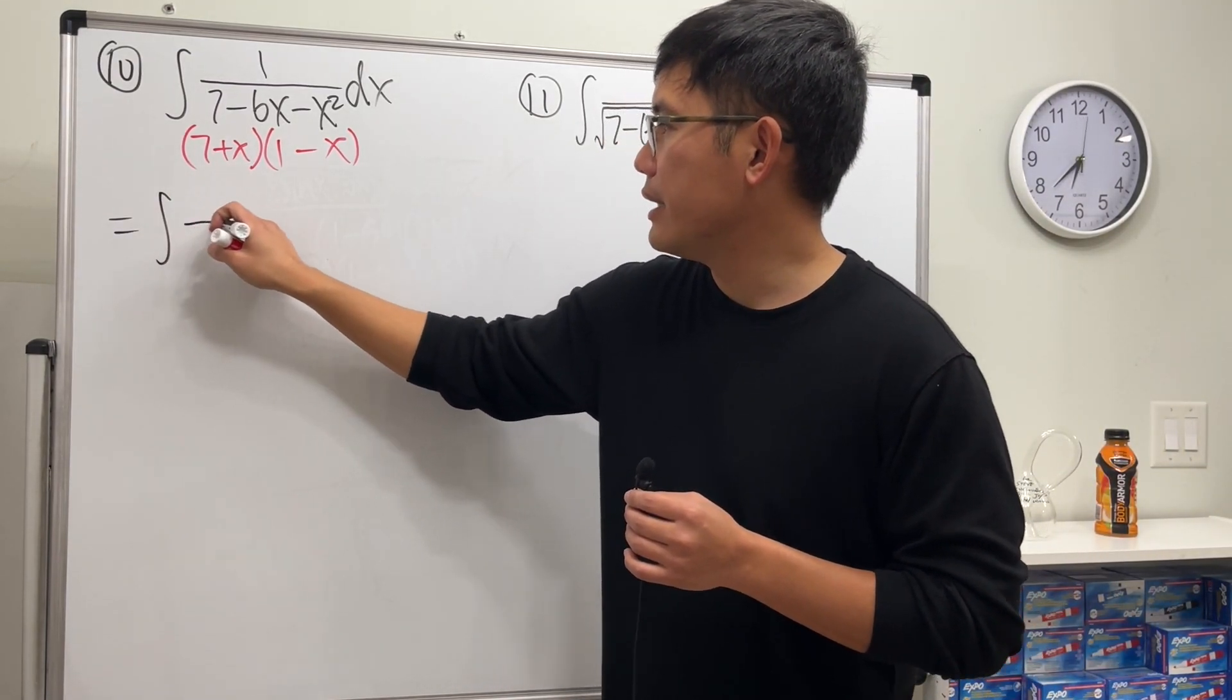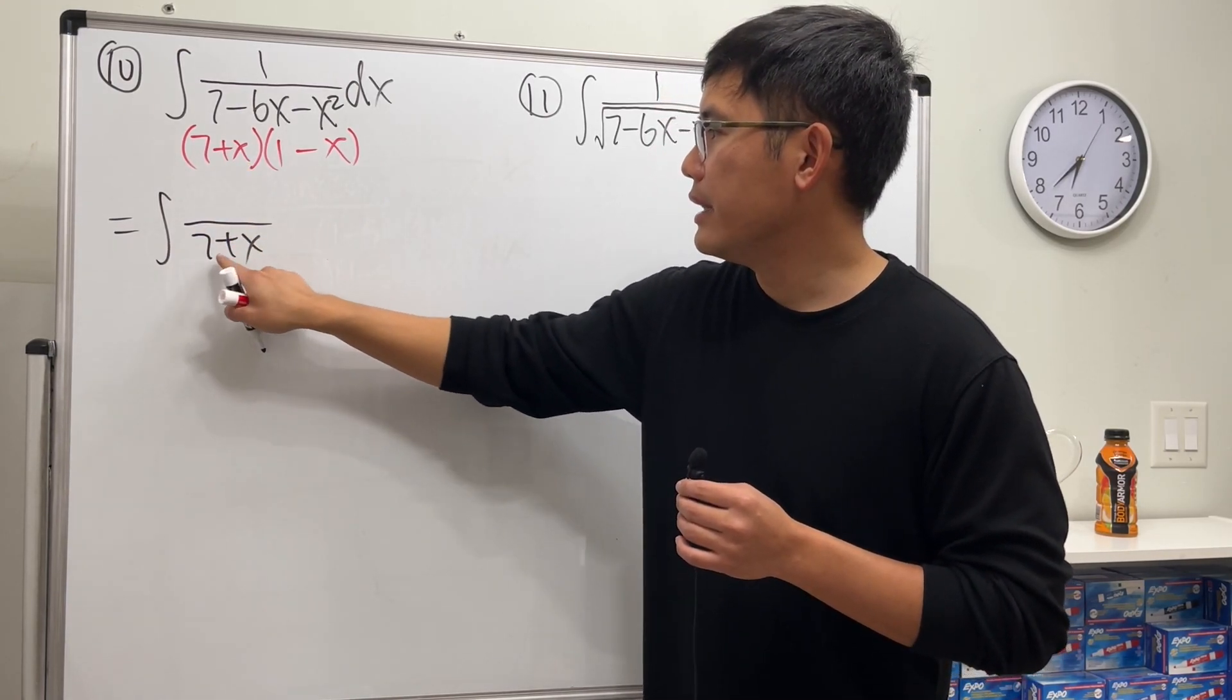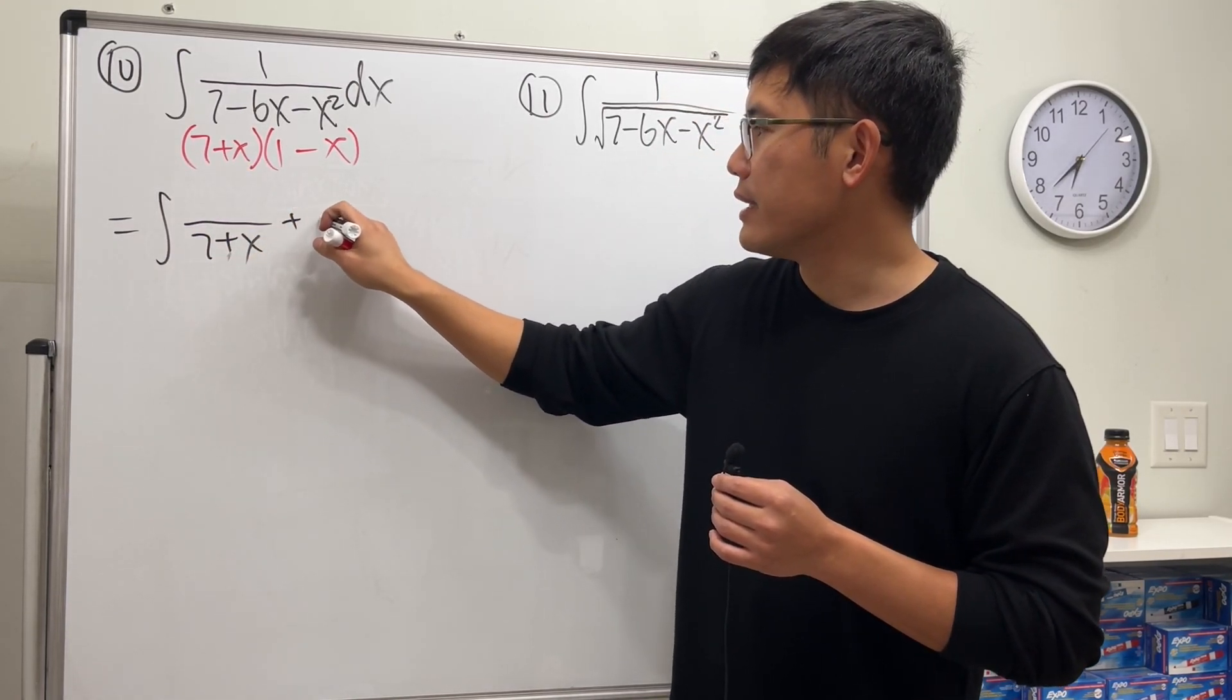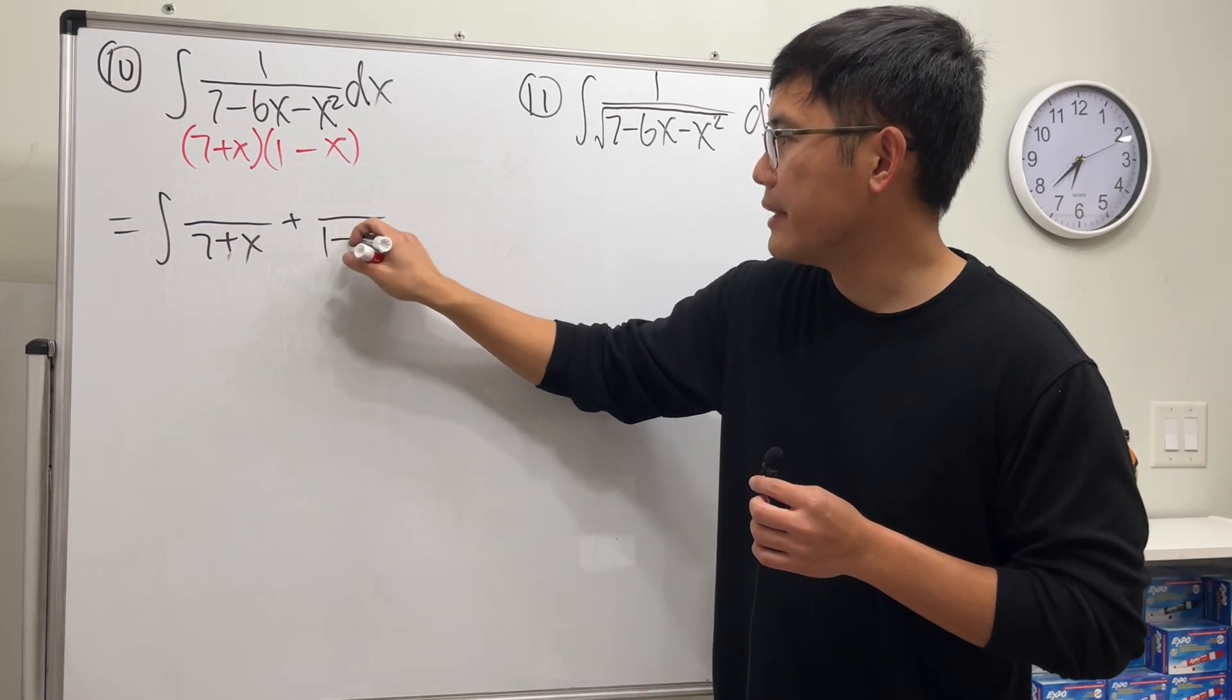So this right here will be the integral, and then we will have some number over 7 plus x, and then add it with another fraction. We are doing the partial fraction. The other one is 1 minus x on the bottom, and we just have to figure out the numbers on the top.